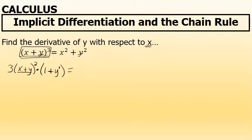On the right side of the equation, the derivative of x squared is 2x, and the derivative of y squared is 2y, but again, because I'm differentiating with respect to x, anytime I differentiate a y, I have to include a factor of the derivative of y with respect to x, which is represented with a y prime.